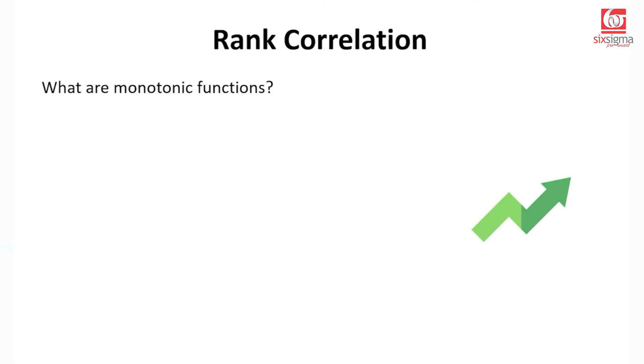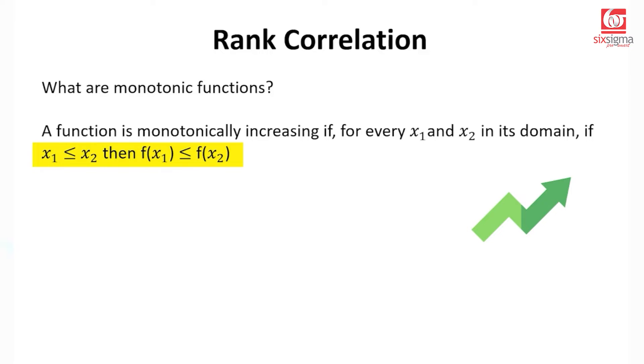Let's first understand what are these monotonic functions. A function is monotonically increasing if for every x1 and x2 in its domain, if x1 is less than or equal to x2, then f(x1) is also less than or equal to f(x2). The values corresponding to x1 on the y-axis would also be behaving similarly.